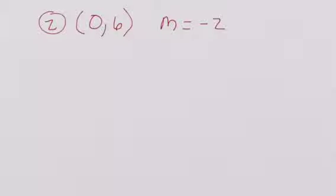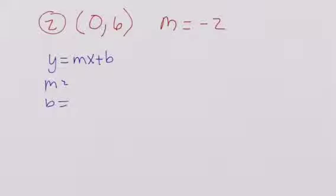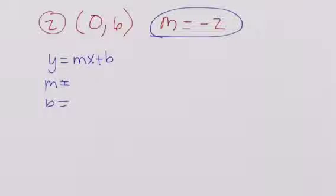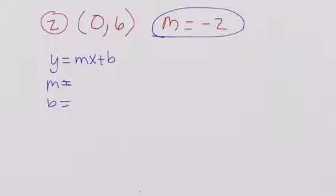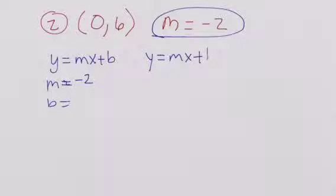Let's do the next one — finding the equation of the line. As soon as we hear the words equation of the line, we write y equals mx plus b, m equals, b equals. In this case, m is given as negative 2, so I have less work to do and just need to find b.